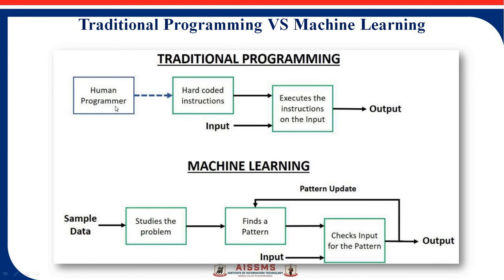In traditional programming, there is a human programmer — a software developer — who writes hard-coded instructions in C, C++, Java, or any other language, one by one. That data is passed as input to the machine, which executes the instructions and generates the output. In machine learning, we pass sample data or sample information. The machine learns from that data — for example, when we pass an image of a cat, the machine finds patterns such as two ears and four legs. After finding the pattern, it checks the input against its dataset and generates the result. This is how machine learning works on sample data.